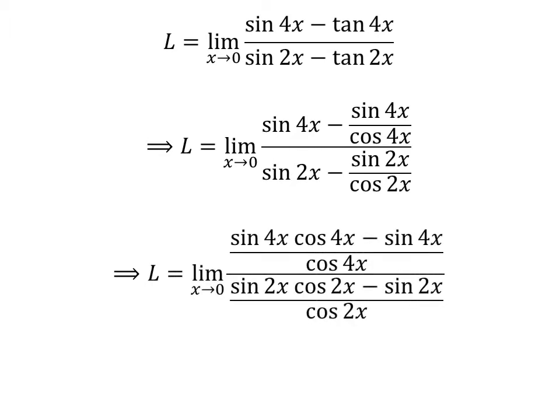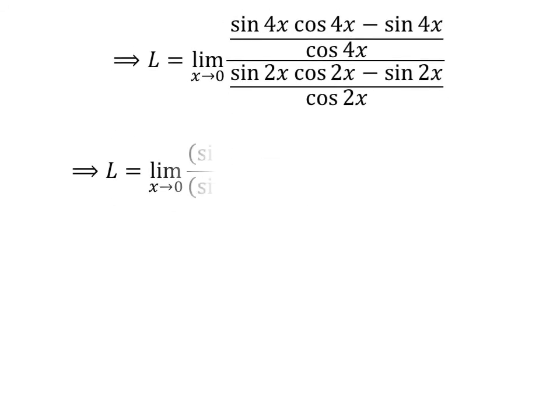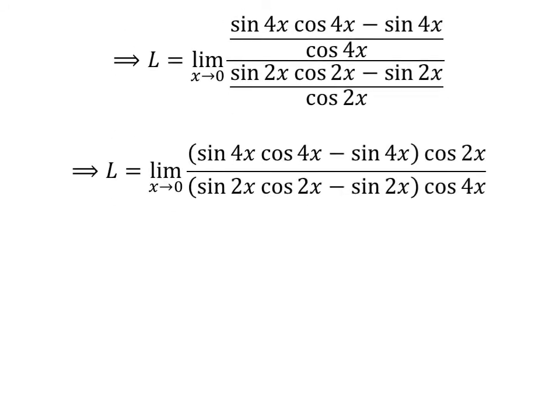Subtracting the fractions, we get L is equal to limit of sine of 4 times x times cosine of 4 times x minus sine of 4 times x, upon sine of 2 times x times cosine of 2 times x minus sine of 2 times x, as x approaches 0. Further simplification gives us L is equal to limit of sine of 4 times x times cosine of 4 times x minus cosine of 2 times x upon sine of 2 times x times cosine of 2 times x minus cosine of 4 times x, as x approaches 0.